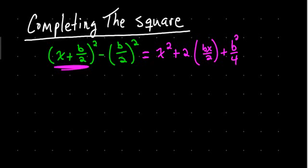And if that was too quick for you, do the FOIL method: first times the first, outside, inside, last, and you'll see that this is going to be what you get. And then we have this minus this term here, so it's minus b squared over 4. And simplifying, I get x squared plus, the 2's cancel, x squared plus bx, and b squared over 4 minus b squared over 4 is 0.